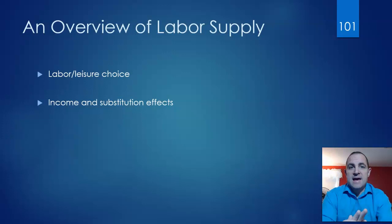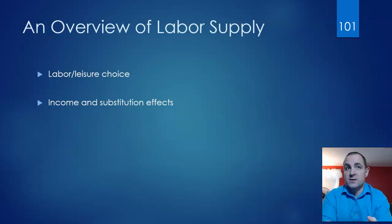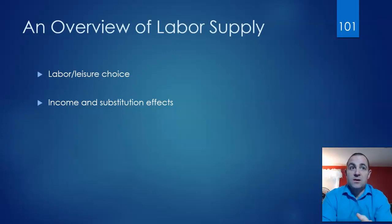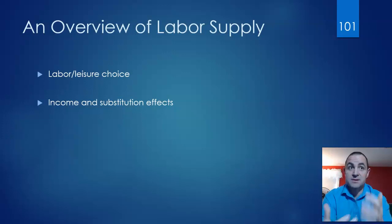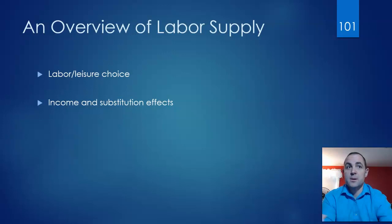As the wage increases, workers experience both an income effect and a substitution effect. With the substitution effect, when the wage rate goes up the cost of leisure goes up, because workers are giving up more money whenever they take leisure. Workers are sacrificing higher earnings when they essentially purchase leisure time. Because it becomes more expensive to take leisure as the wage rises, the substitution effect leads workers to work more.